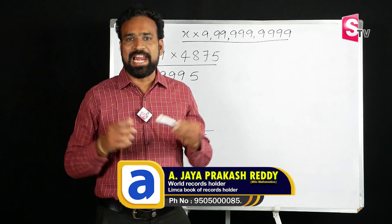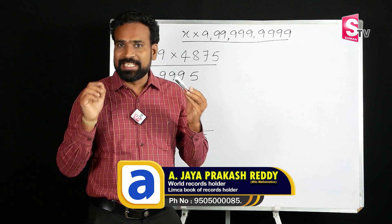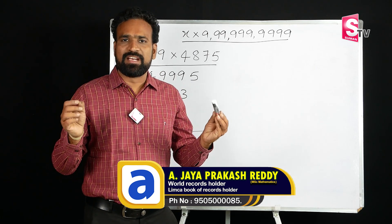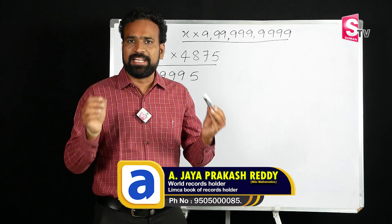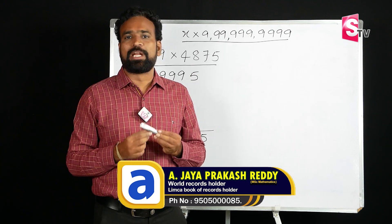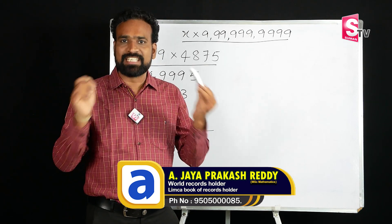Hi everyone, welcome to AlliMinds. In this video, we will use Vedic Mathematics. This method works with numbers like 9, 99, and 35-line numbers. We will do the multiplication in 2 to 3 seconds.